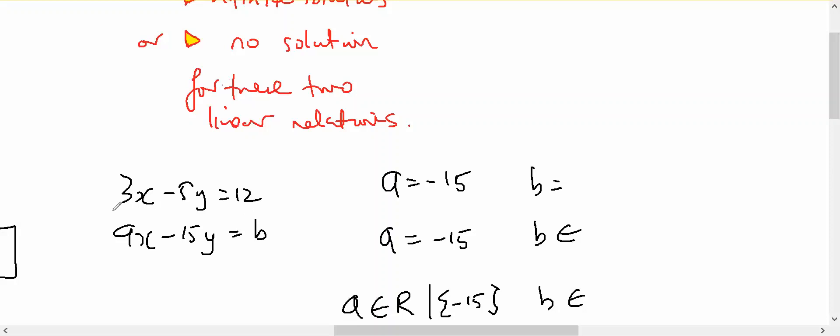If A equals negative 15, if I multiply this by 3, I get identically the same. So if it's 36, these two equations are identical. Therefore, infinite solutions.